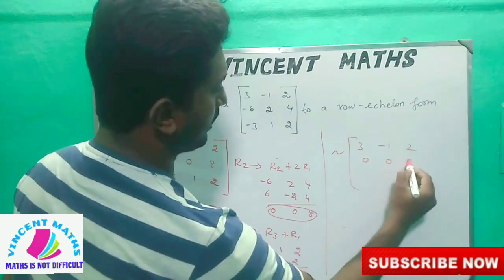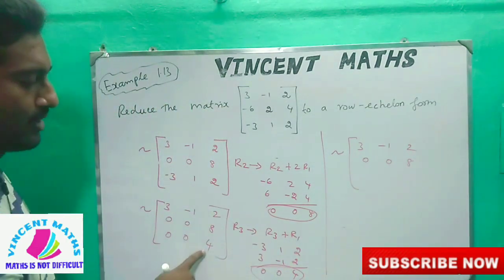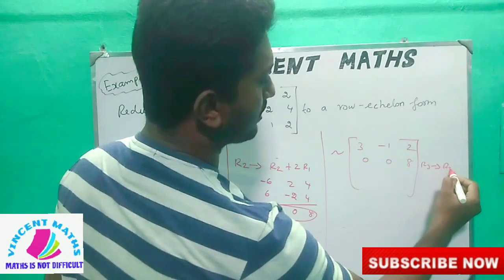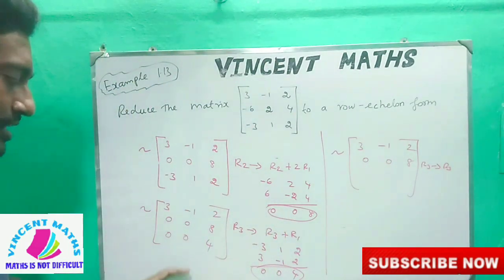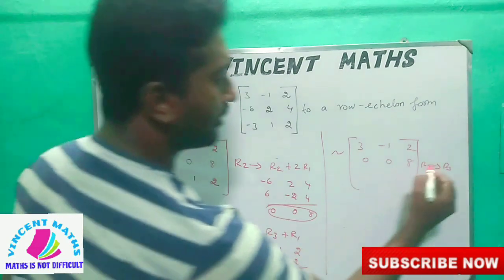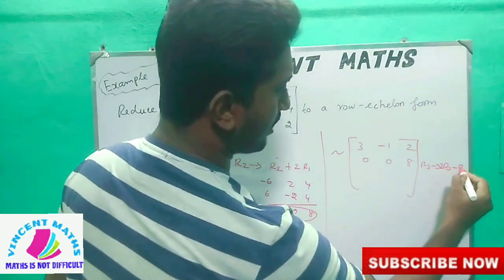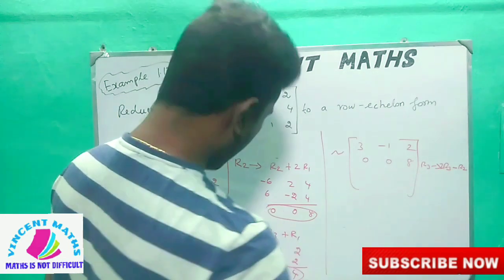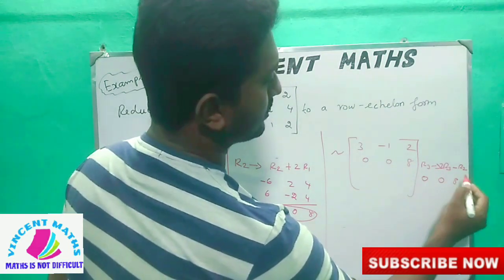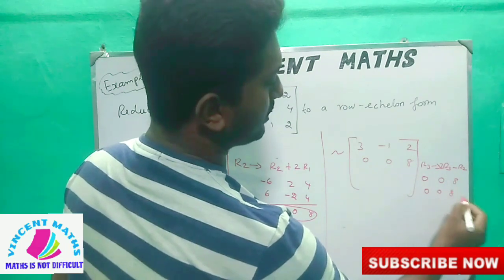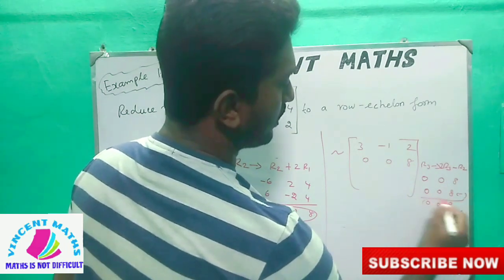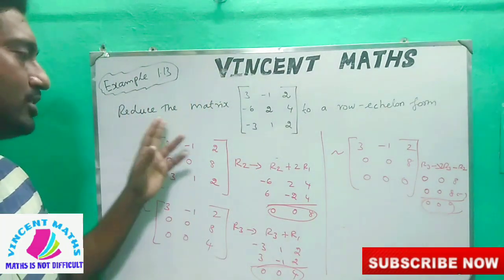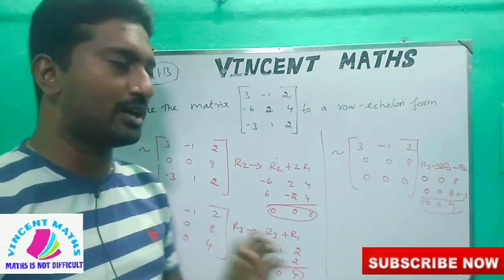So let's go: this 3 minus 1 is 2, 0, 0, 8. If we do what we do - R3 is 3. What we do: this 4 is 0, so R3 is 3. How do we do this? 2 is 8. 2R3 minus R2. R3 is 2: 0, 0, 8. Minus R2: 0, 0, 8. Minus 0, 0. So we have R3. If we look at this - we have to say something about Row Echelon Form. First entry element is 0, second entry element - in the end, the change is 0.